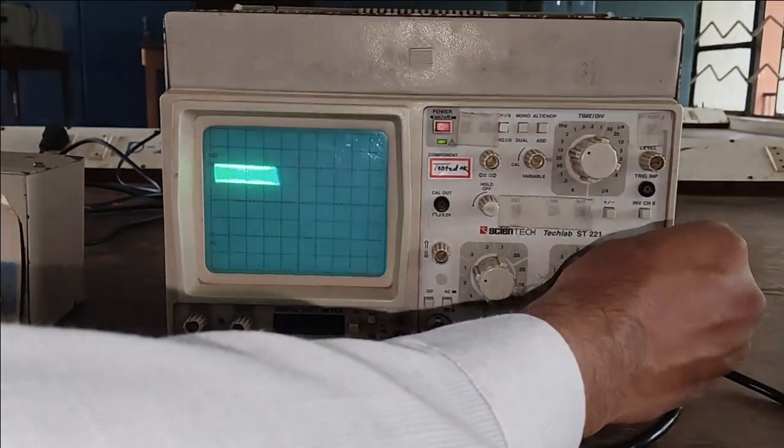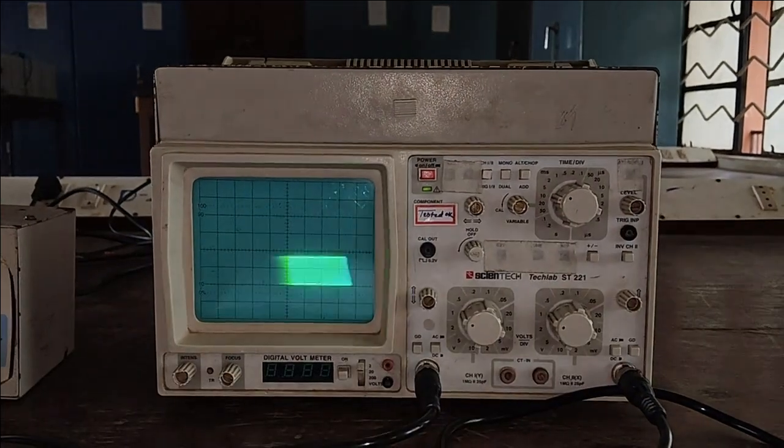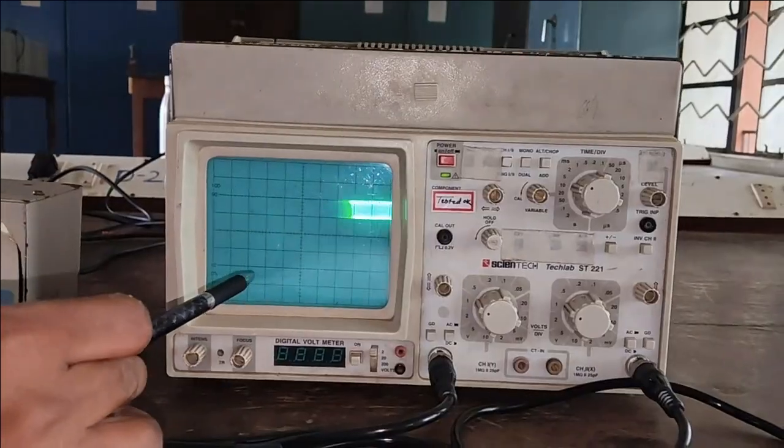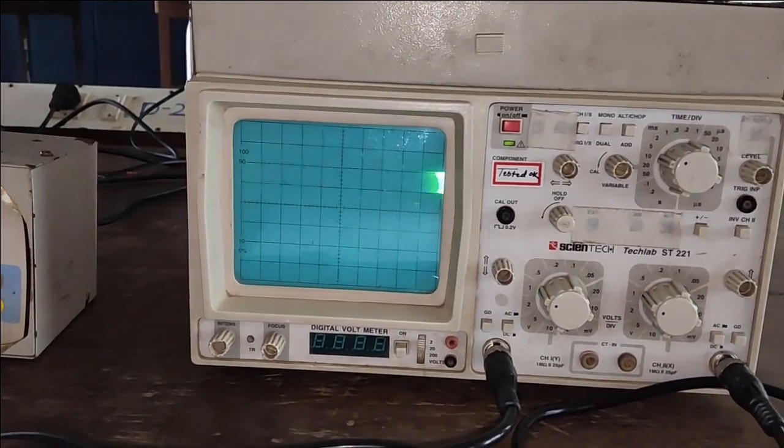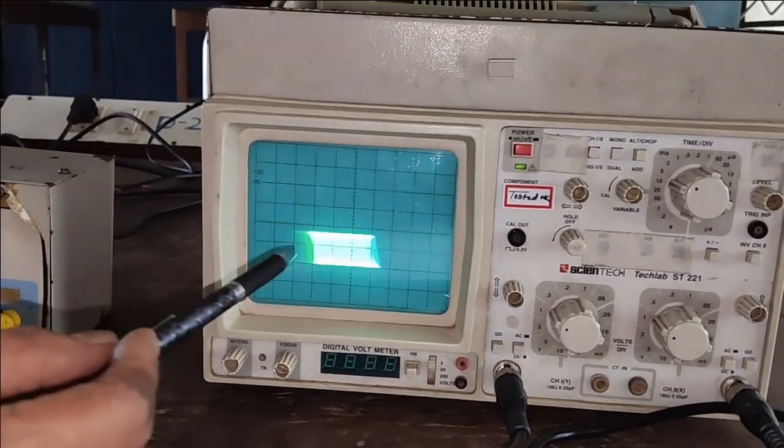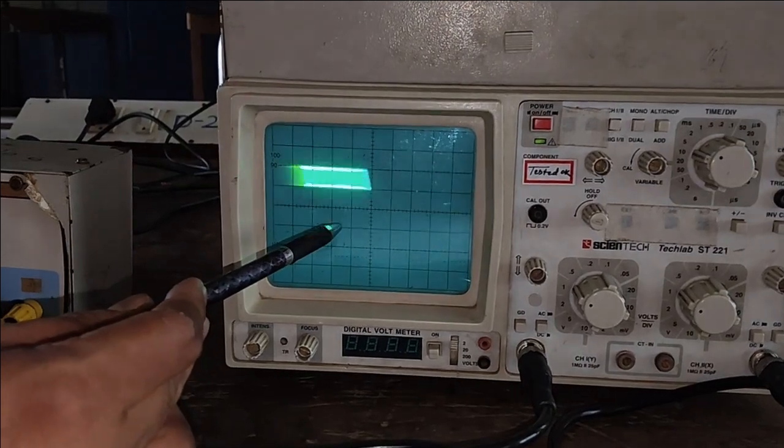Here we can observe that as we increase the frequency after cutoff frequency the voltage is also increased. At frequency of 5 kHz we are getting the output voltage as 1.6 volt.